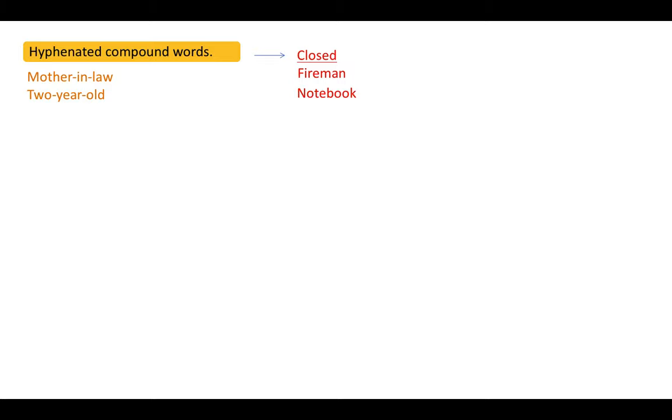Open compound words are made up of two nouns that represent a single idea. There's a space between the words, but no hyphen. For example, dinner table, living room.